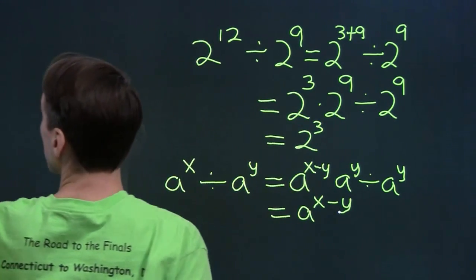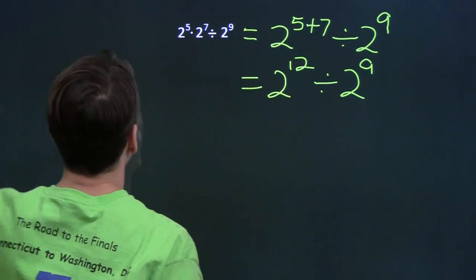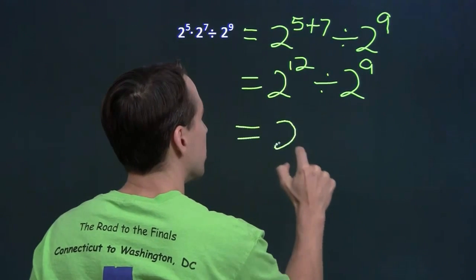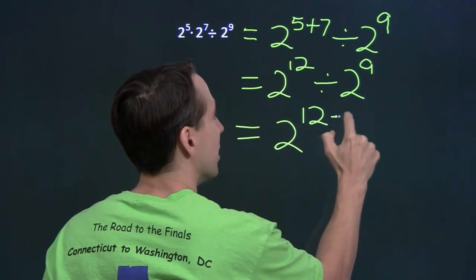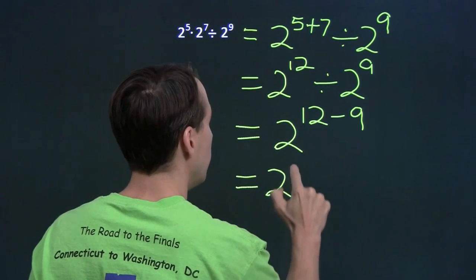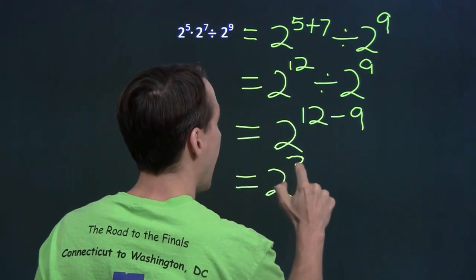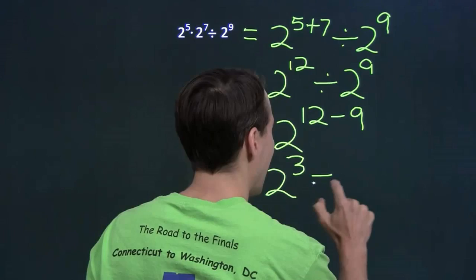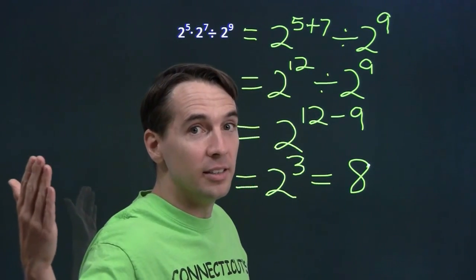So now we can take this back to our original problem and finish up. Using the rule we just discovered, this is two to the twelve minus nine, which is two cubed. And that's a power of two we can handle: two times two times two. That is eight, and we are done.